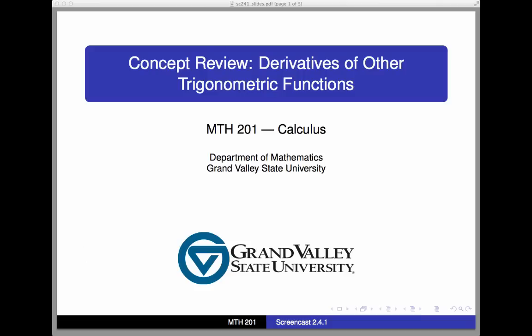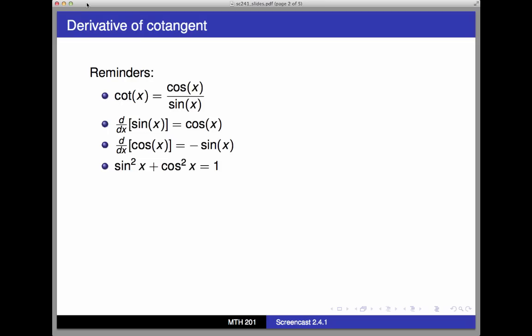Let's briefly recap the main results of section 2.4 in Active Calculus on derivatives of other trigonometric functions. We've already seen that the derivative of the sine function is the cosine function, and that the derivative of the cosine function is minus sine. We can put these two facts together with the quotient rule and some basic trigonometric identities to get the derivatives of the remaining four trigonometric functions.